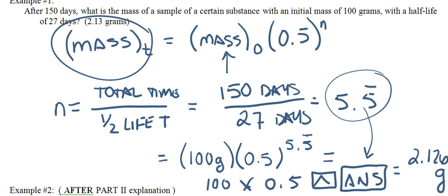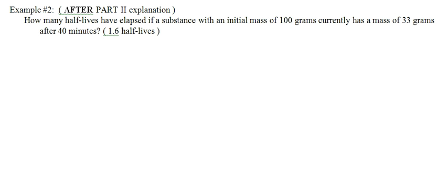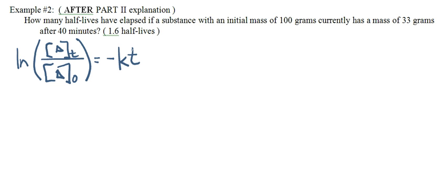The next example, it says, and it says on here, after part two explanation. All part two explanation is dealing with is using the natural log that we used in Kinetics. The question is, how many half-lives have elapsed if a substance with an initial mass of 100 grams currently has a mass of 33 grams after 40 minutes? Remember that whenever we use the equation, the natural log, we have to find out what our k is. I'm going to use this equation here. We know everything except for k for this situation. So we have to find out what the k is.